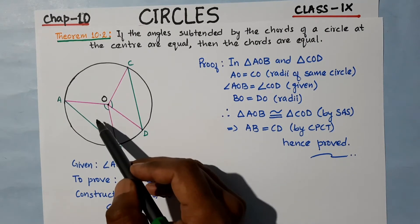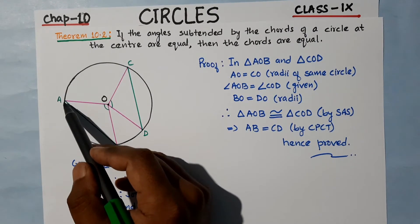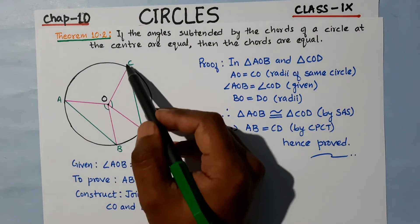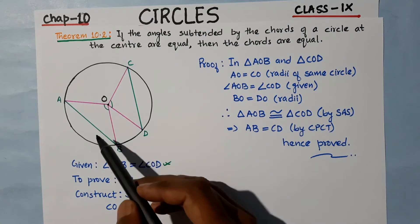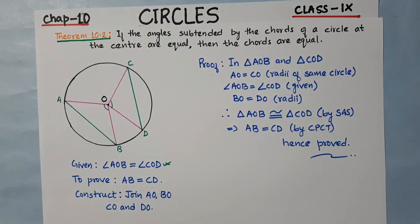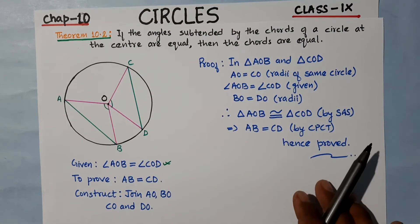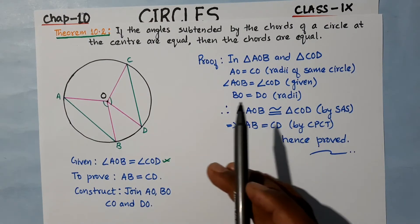Now we need to prove that triangle AOB and triangle COD are congruent. Once these triangles are congruent, by CPCT we can prove AB equals CD.